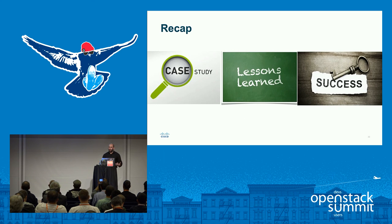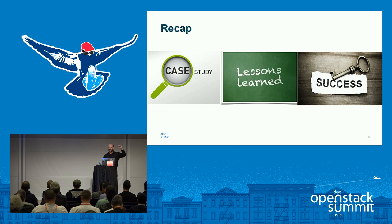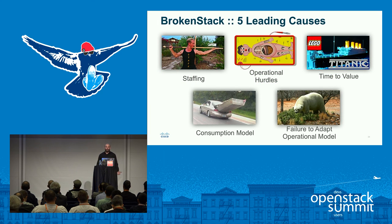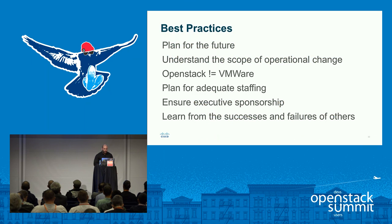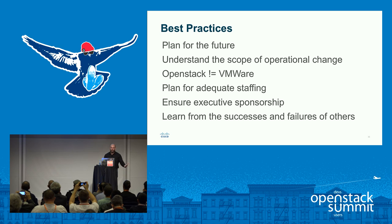To recap: we walked through case studies and the lessons those people learned, covering how you can learn from their mistakes. We went through the five leading causes of OpenStack failure: staffing, operational hurdles, time to value, consumption model, and failure to adapt operational models. Best practices: plan for the future, understand the scope of operational change, understand OpenStack is not VMware, plan for adequate staffing, ensure executive sponsorship, and learn from the successes and failures of others.